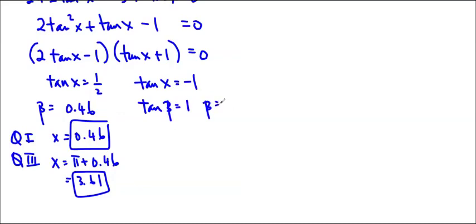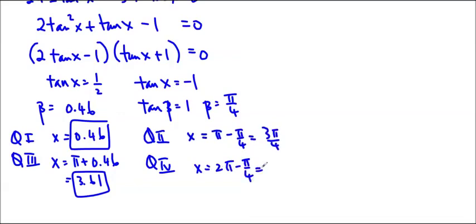So here I'm going to do tan beta is equal to 1. And I already know what beta is, it's π/4. So I'm going to use that in my two quadrants. So quadrant 2 is when tan is negative in quadrant 4. So again, if you can find the exact value, you definitely should. So π - π/4 is equal to 3π/4. And x is equal to 2π - π/4. So that is equal to 7π/4. And so you can see I've got my four solutions in this quadratic.